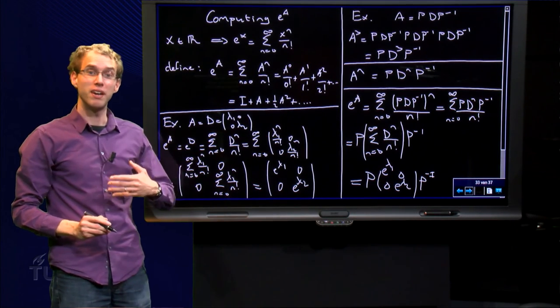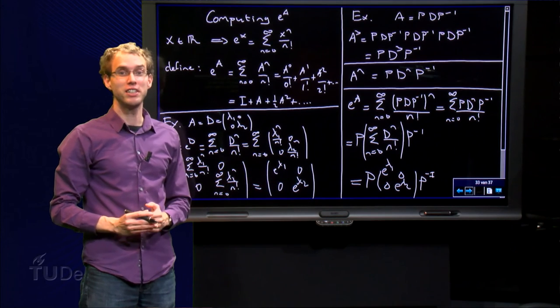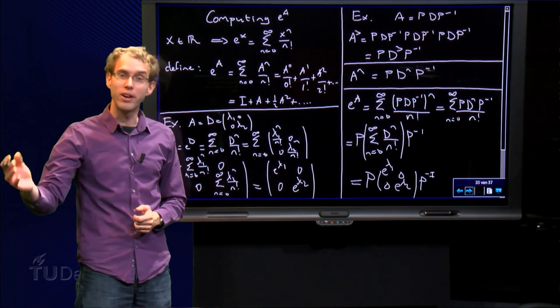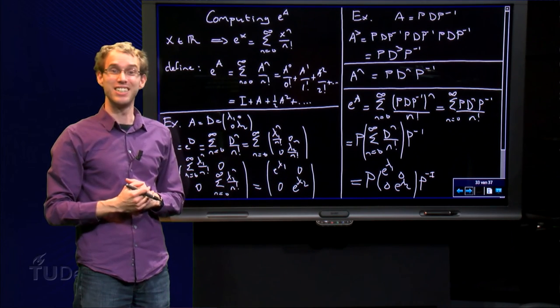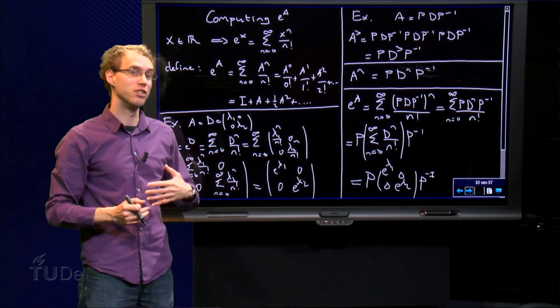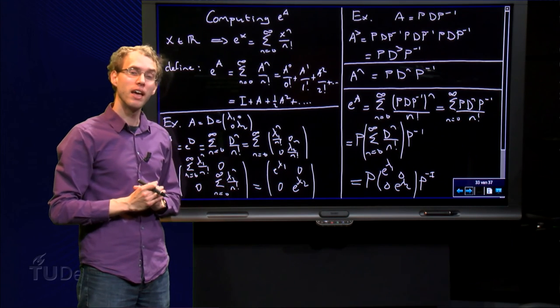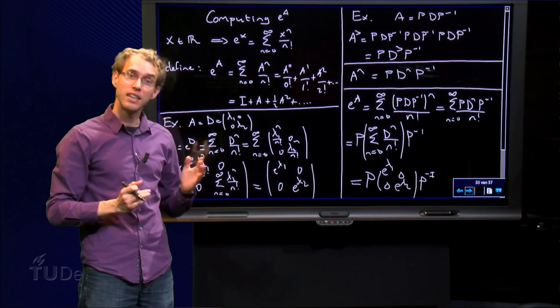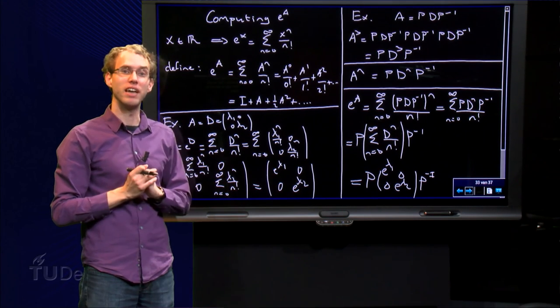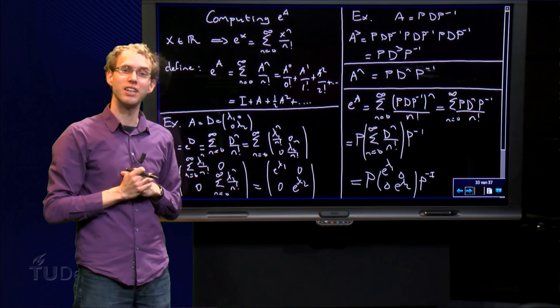So if A is either a diagonal matrix D, or if A is similar to a diagonal matrix D, then it is not so hard to compute the matrix exponential e to the power A, as we have seen in all these examples.